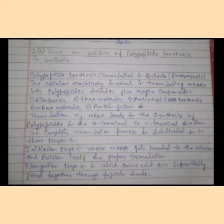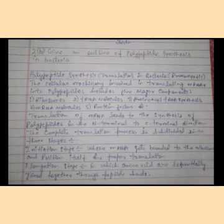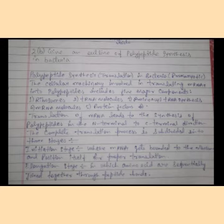How does polypeptide synthesis occur in bacteria? We call this the translation of mRNA. The cellular machinery involved in translating mRNAs into polypeptide includes five major components: ribosome, tRNA molecule, aminoacyl-tRNA synthetase, mRNA molecule, and protein factors.